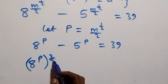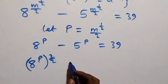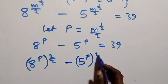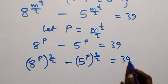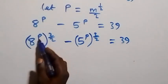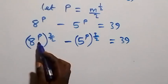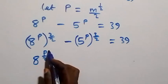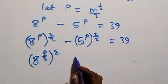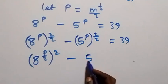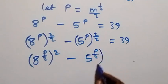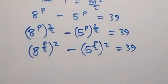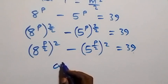We can write this as 8 raised to power p, then raised to power 2 over 2 — since 2 over 2 is still 1, it's the same thing — minus 5 raised to power p, then raised to power 2 over 2, which equals 39. Since this power multiplies, we separate these to get 8 raised to power p over 2, squared, minus 5 raised to power p over 2, squared, which equals 39.